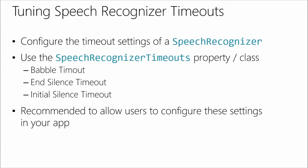Next, you can play with timeouts on the speech recognizer. There are several: the babble timeout, the end silence timeout, and the initial silence timeout. The end silence timeout is how long the recognizer waits after it stops hearing words before it says 'okay, you're done talking' and performs recognition. The initial silence timeout is useful if your users tend to freeze or need more time to think — you can extend it so the silence before they start talking is allowed.